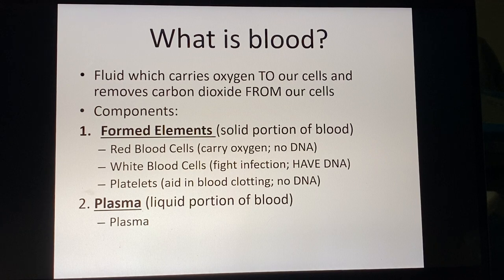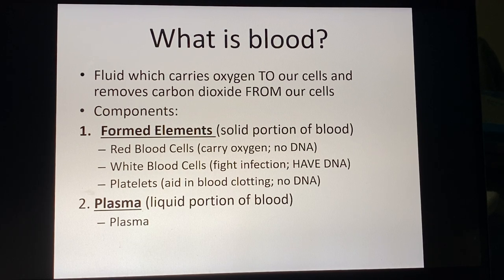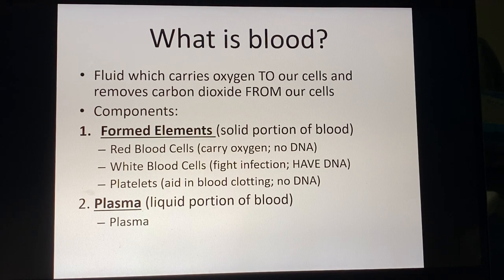We can separate blood into two main fractions. The first are called formed elements, also known as the solid portion of blood. Some people call it the cellular portion, but I use 'formed elements' because not everything in this fraction is an actual cell. We have red blood cells and white blood cells, but then we have platelets, which are not intact cells.